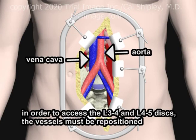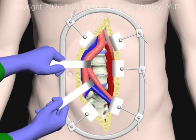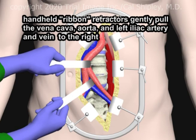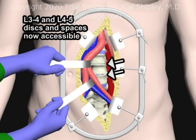In order to access these levels, the vena cava and aorta must be repositioned by the surgeon. Handheld ribbon retractors gently pull the vena cava, aorta, and the left iliac artery and vein to the right. The L3-4 and L4-5 disc spaces are now accessible, and the ALIF procedure may proceed.